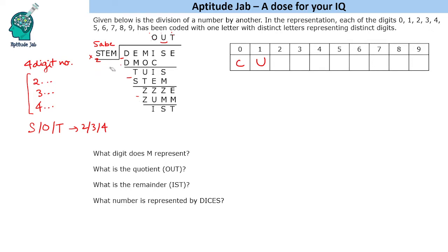Similarly, if S is 2, we cannot have 5 for O or T either. So these values have to be between 2, 3, and 4 — we cannot have more than 4 for any of S, O, or T. It is yet to decide which is which.